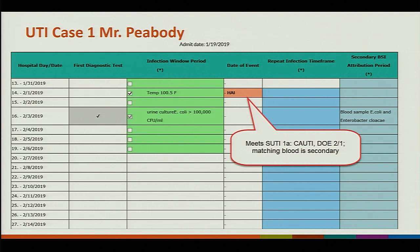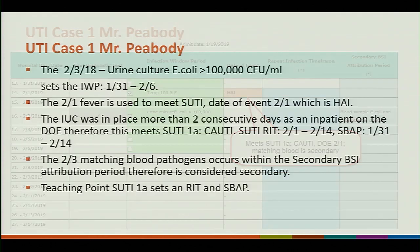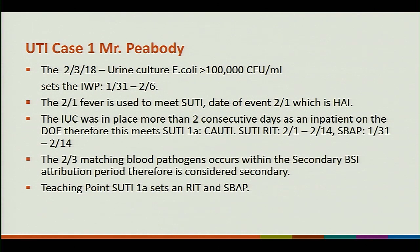The 2-3 matching blood pathogen occurs within the secondary BSI attribution period, therefore it's considered secondary. So our teaching point here is that this is a SUTI 1A with an RIT and an SBAT. When you get these slides within a few weeks, you will have this explanation to go with your slides when they're posted.